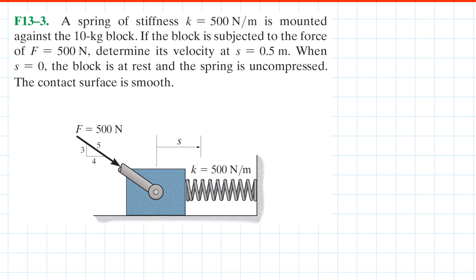This is Chapter 13, Problem 3. We are told we have a spring of stiffness k equal to 500 Newton per meter, mounted against a 10-kilogram block. The block is subjected to a force of 500 Newtons. We need to determine its velocity at a position of 0.5 meters. We assume here is position 0, where the block is at rest.